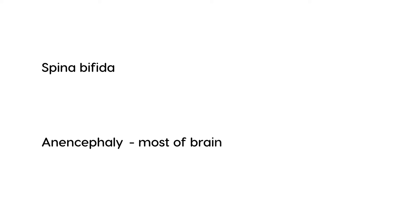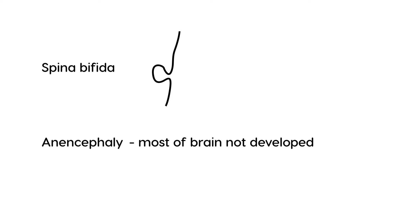Anencephaly refers to the fact that most of the brain and skull has not developed. This is incompatible with life, and the fetus is basically stillbirth or dead upon birth. Spina bifida essentially means that part of the spinal cord is protruding — there's a portion of the spinal cord that actually protrudes out of the baby's back and needs to be surgically repaired.